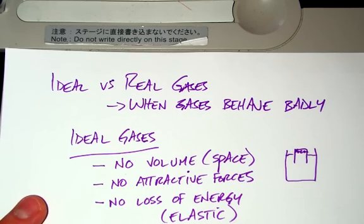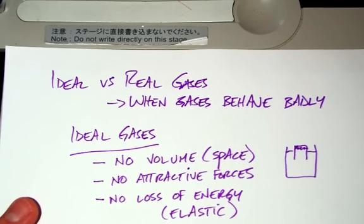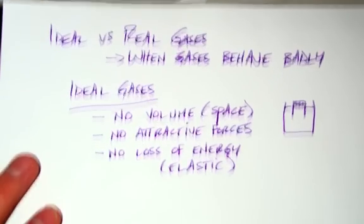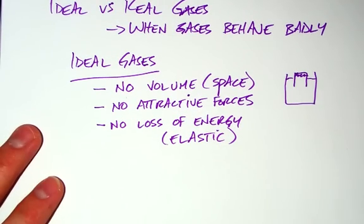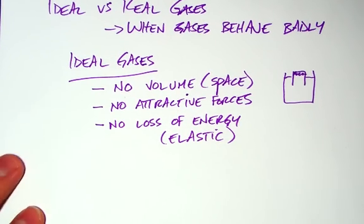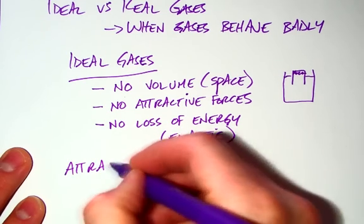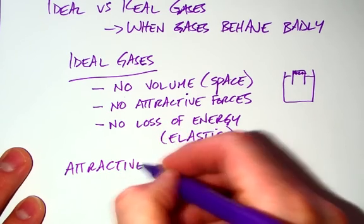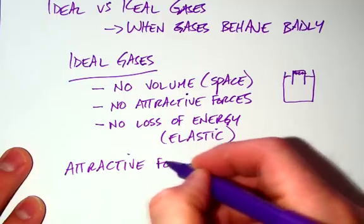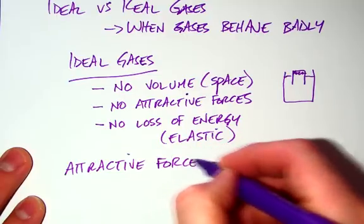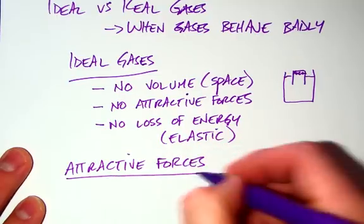So these are the three properties of ideal gases, and we know that they differ from real gases. Now what we want to think about is how could we take real gases and make them behave badly? And it has to do with attractive forces.